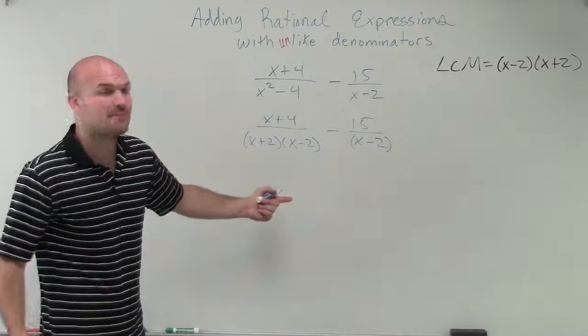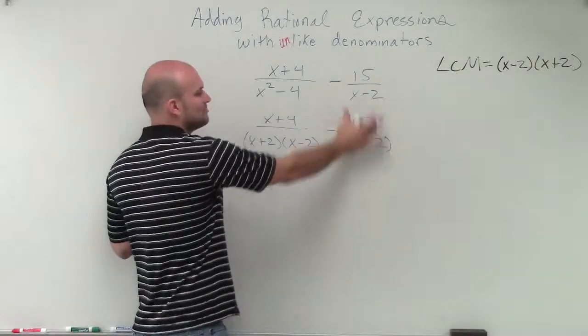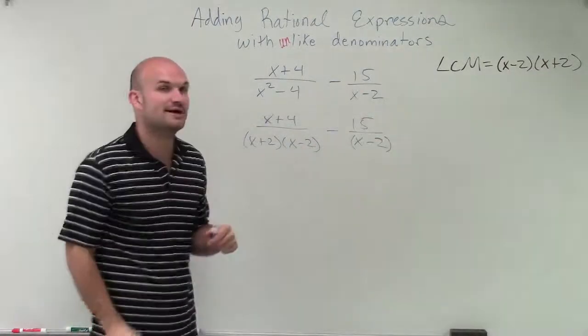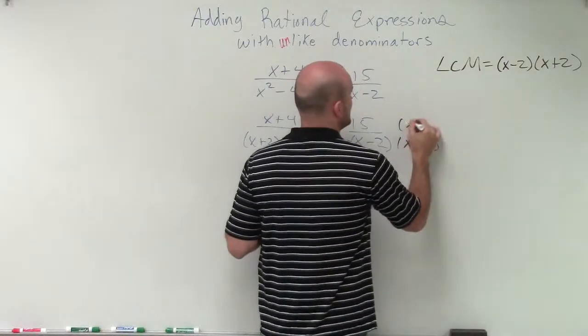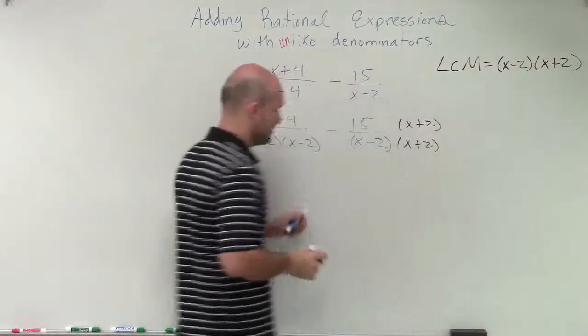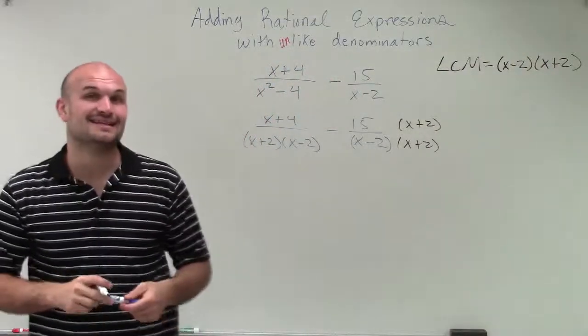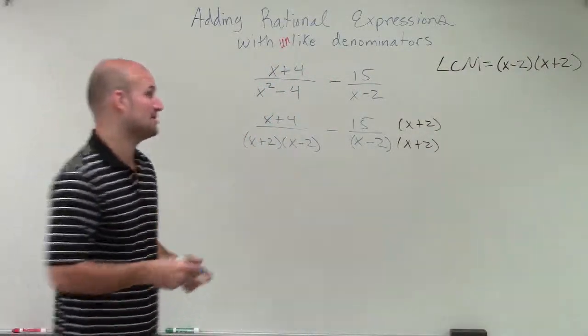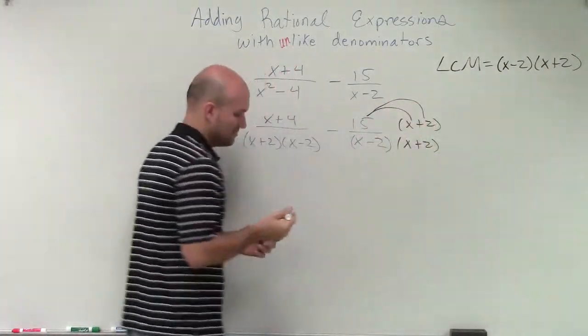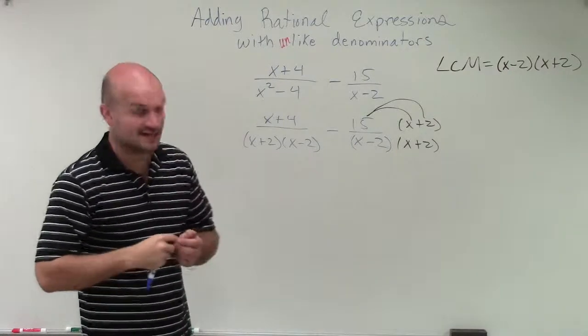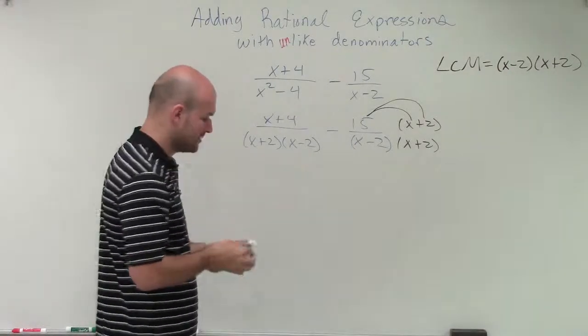So therefore to get common denominators I'm just going to have to multiply, since this already has the LCM, I'm just going to have to multiply this fraction by x plus 2 in the denominator and in the numerator. Now we notice that these are binomials that are going to be a part of this. So therefore when I simplify this, I need to make sure that I apply distributive property. When I combine these, I need to make sure I apply my distributive property.